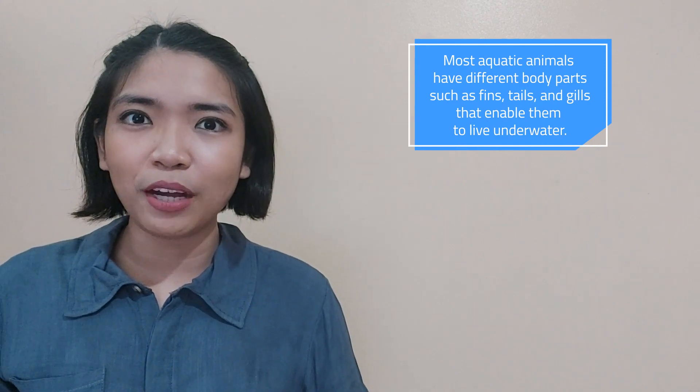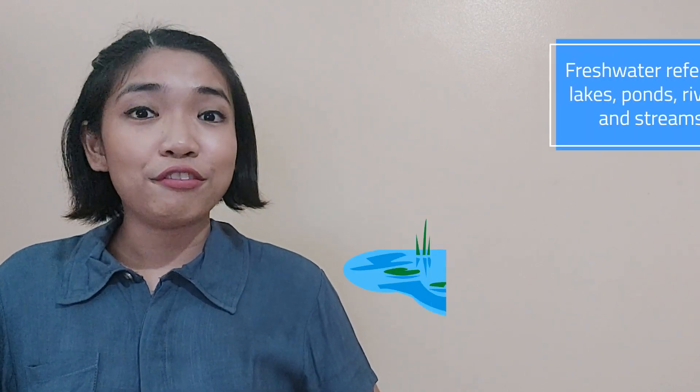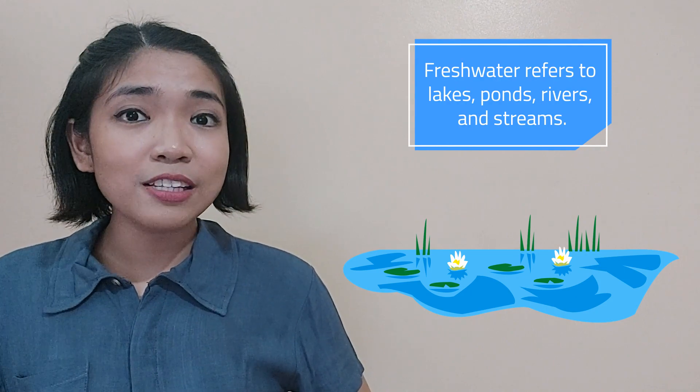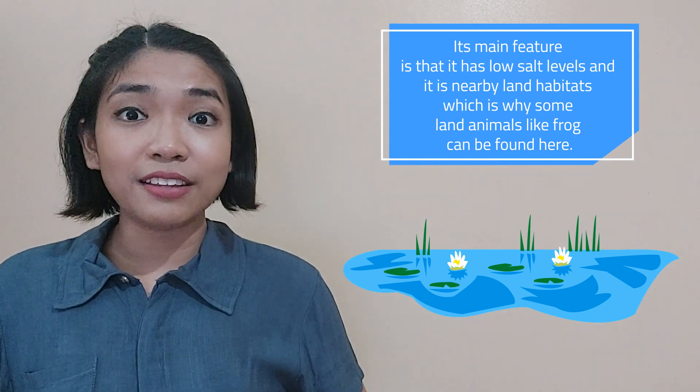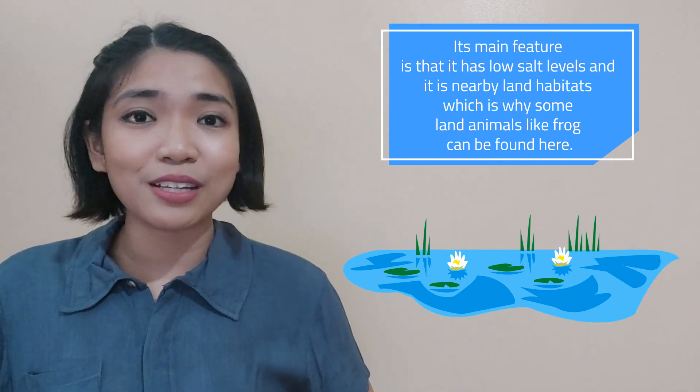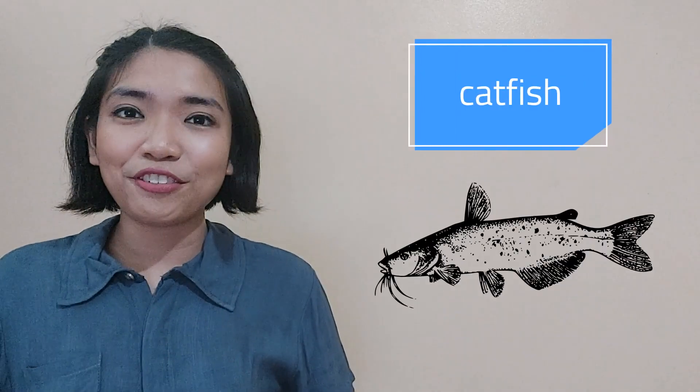Our second stop is the water world. Water is home to aquatic animals. Unlike terrestrial animals with legs and arms, most aquatic animals have different body parts such as fins, tails, and gills that enable them to live underwater. Aquatic habitats include freshwater, which refers to lakes, ponds, rivers, and streams. Its main feature is low salt levels, and it is nearby land habitats, which is why some land animals like frogs can be found here.